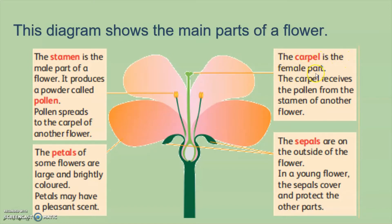Next, the carpel. The carpel is the female part of the flower. The carpel receives pollen from the stamen of another flower. Next, the petals. The petals of some flowers are large and brightly colored. Petals may have a pleasant scent. Then the sepals — the sepals are on the outside of the flower. In a young flower, the sepals cover and protect the other parts.